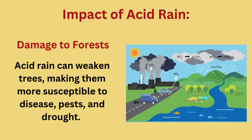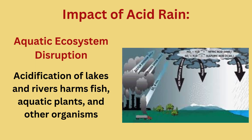Impact of acid rain — damage to forests: acid rain can weaken trees, making them more susceptible to disease, pests, and drought. Aquatic ecosystem disruption: acidification of lakes and rivers harms fish, aquatic plants, and other organisms.